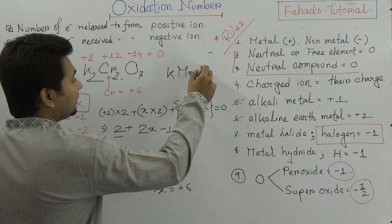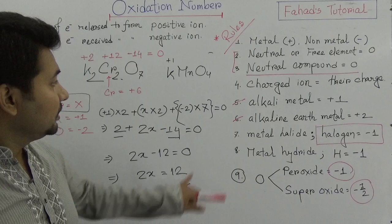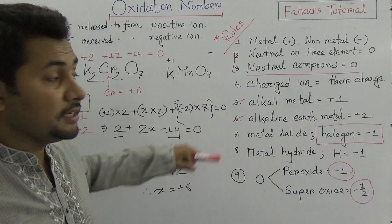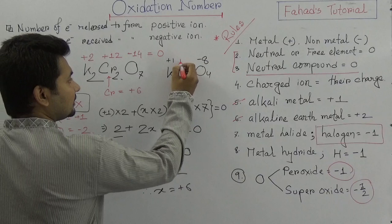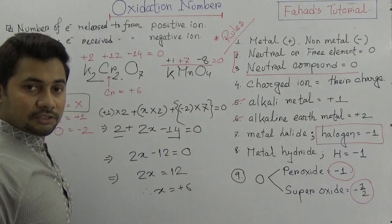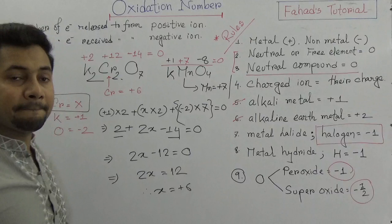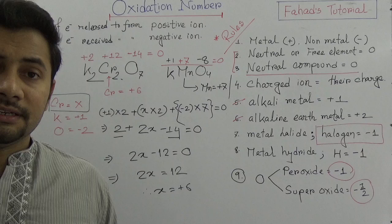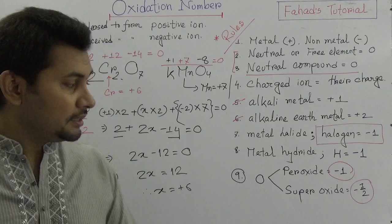For potassium permanganate (KMnO₄), potassium is +1 and oxygen is −2 × 4 = −8. So: +1 + Mn − 8 = 0, meaning manganese must be +7. In case of ammonia (NH₃), nitrogen's oxidation number is −3, while hydrogen is +1 (since NH₃ is not a metal hydride). The three hydrogens together are +3, and +3 + (−3) = 0.